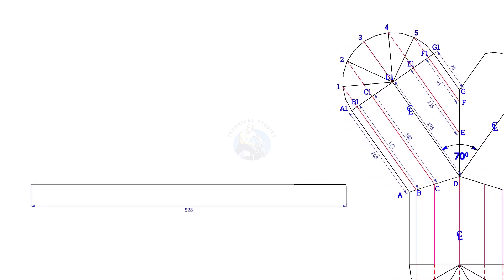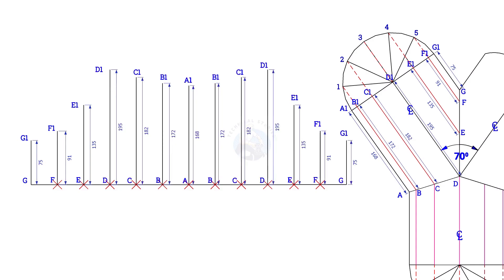Draw the pipe circumference line. Divide the line into 12 equal parts and draw vertical lines G, G1, F, F1, etc., and draw a curve as in the previous layout.